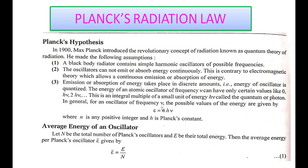The values of energy are given by E = nhν, where h is Planck's constant, ν is the frequency of radiation, and n is the quantum number taking values 0, 1, 2, 3, 4, and so on. Now we will calculate the average energy.